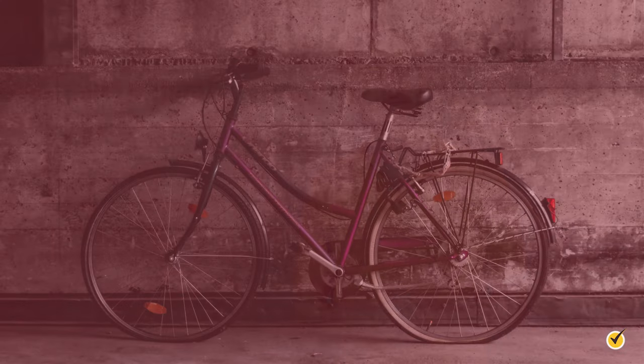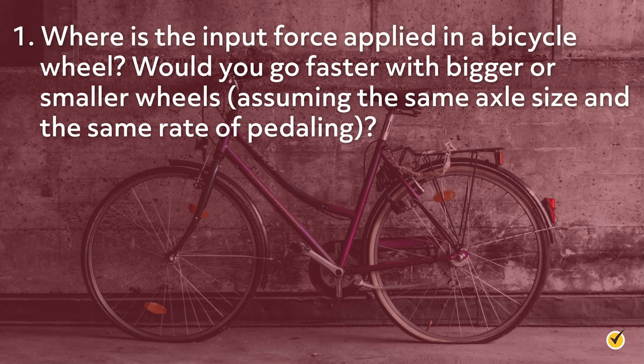Now that we've discussed how wheel and axle machines work and how gears can be used with them, let's check our understanding with a couple of questions. Number one: where is the input force applied in a bicycle wheel? Would you go faster with bigger or smaller wheels, assuming the same size axle and the same rate of pedaling?